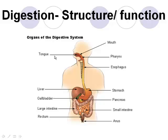Welcome back. This is part one of the digestion unit. We're talking about structure and function and basically the pathway that food travels in the digestive system. Here's a quick overview of our digestive pathway and all the different components of the digestive system, and then there are also a couple that we call accessory organs that we'll be touching on a little bit later.